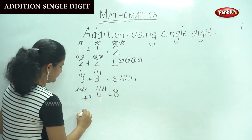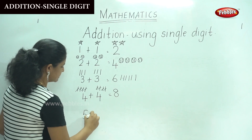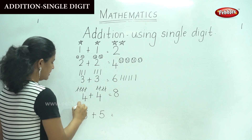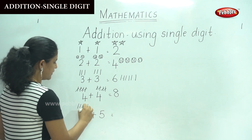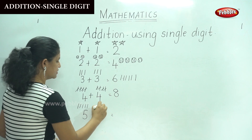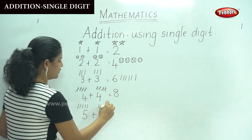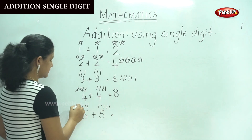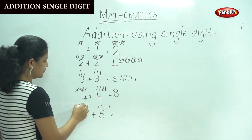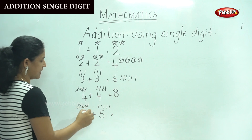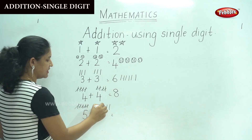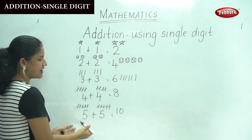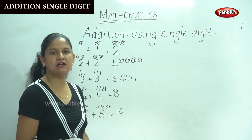The next is 5 plus 5. Drawing 5 sticks on each side: 1, 2, 3, 4, 5 and 1, 2, 3, 4, 5. Counting both sides together: 1, 2, 3, 4, 5, 6, 7, 8, 9, 10, which gives us number 10. So 5 plus 5 gives us number 10.